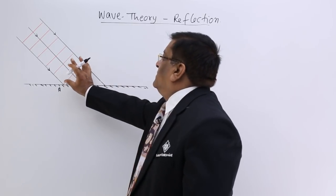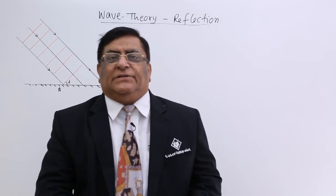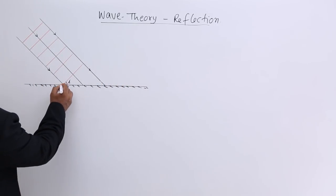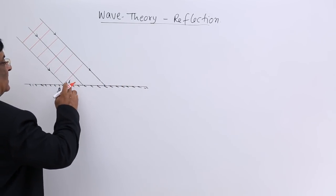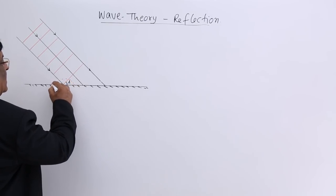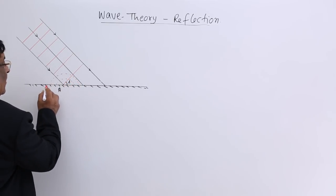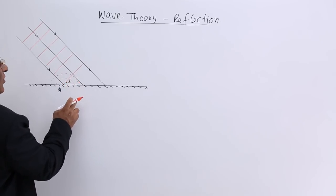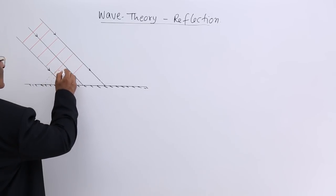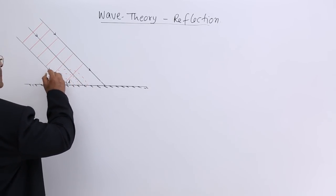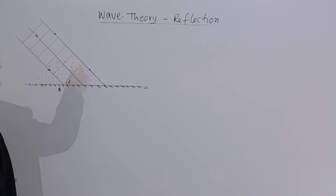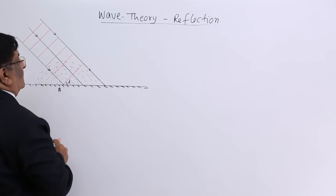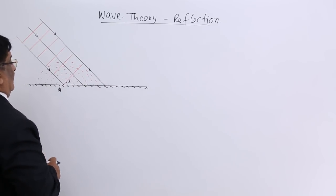Now, what happens when this stage is reached? According to Huygens' principle, all points become active and act as sources. This point also acts as a source and starts making its own wave. Because this medium is not transparent, the disturbances cannot travel into the mirror. So the waves keep propagating in the reflected direction, and we draw a perpendicular to the new wavefront to find the direction of propagation.